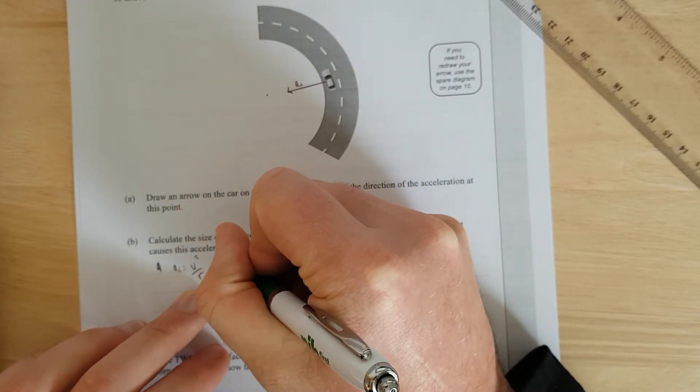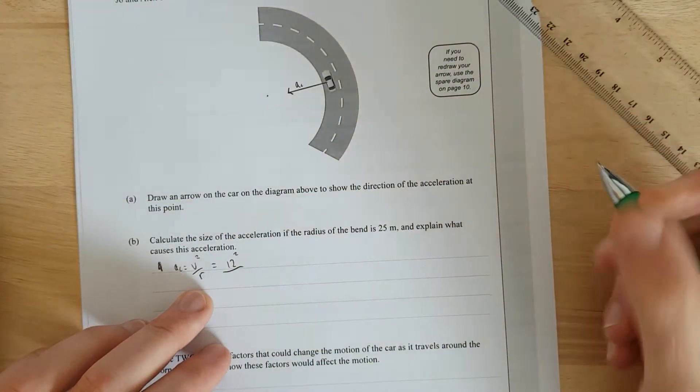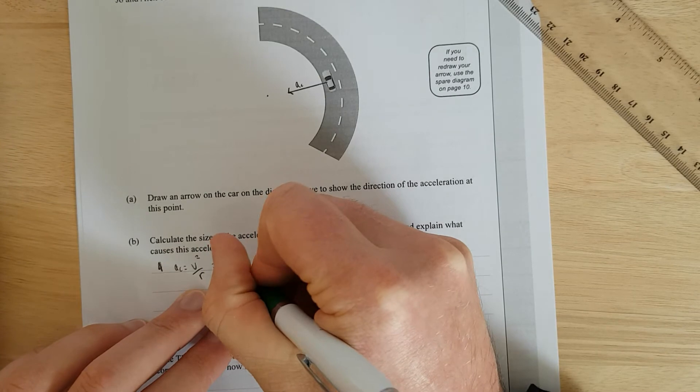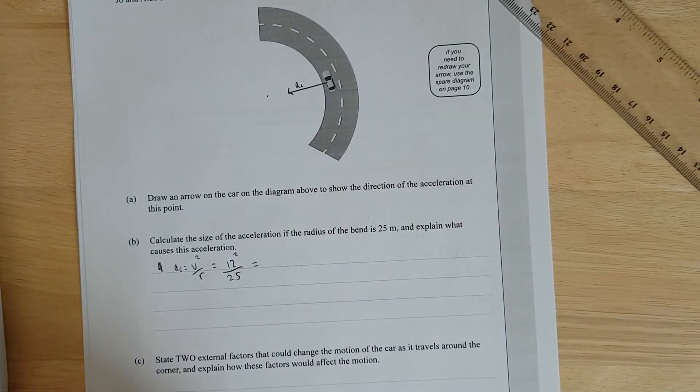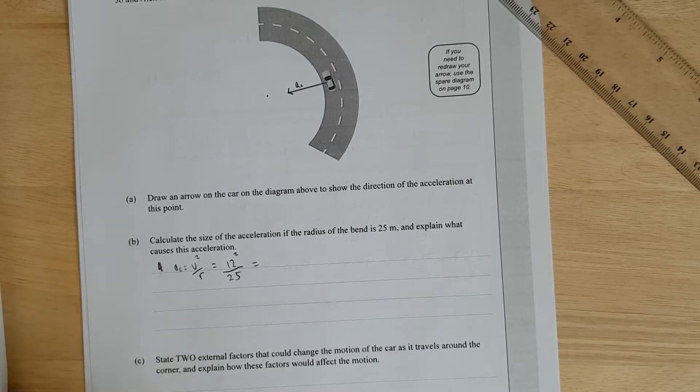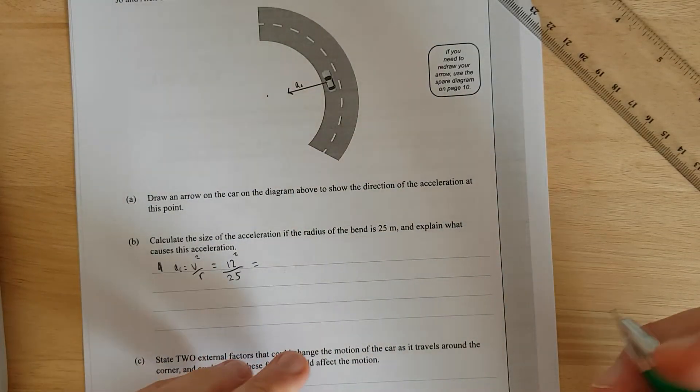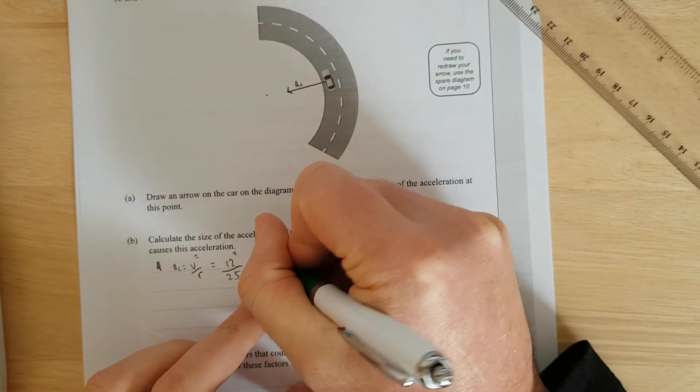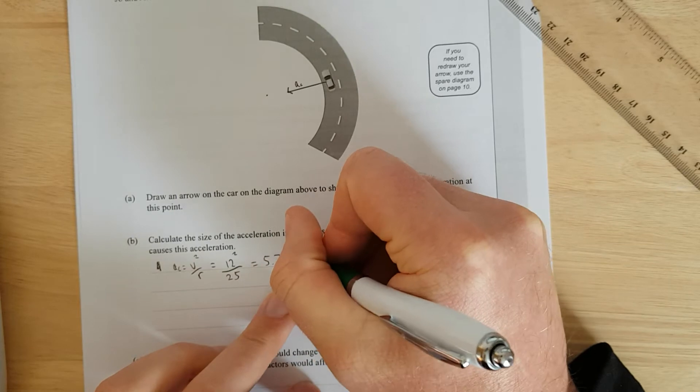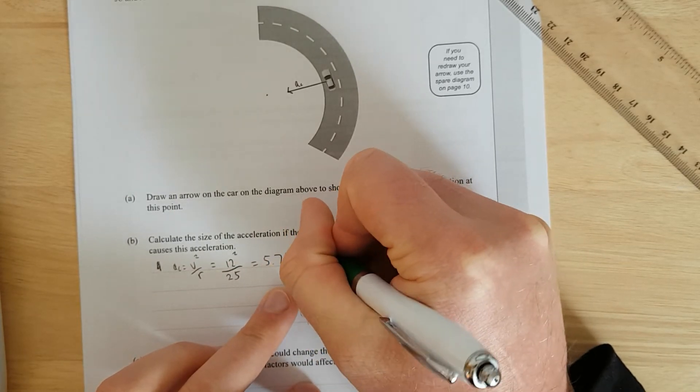So we're going to have 12 squared, which is 144, over what's the radius? 25. And that is going to be equal to 12 squared divided by 25. And that is going to give me 5.76 meters per second squared.